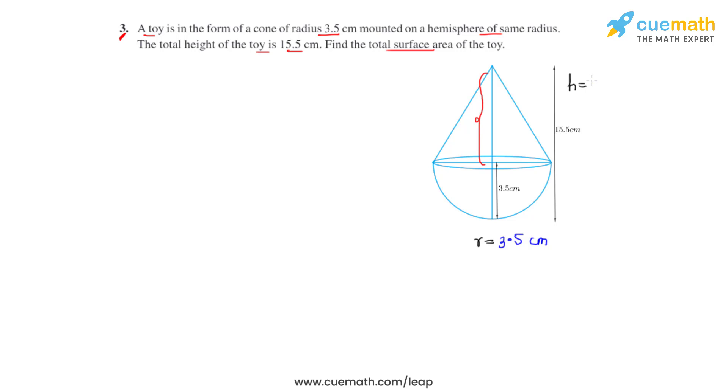Now in the question they have asked us to find the total surface area of the toy. The total surface area of the toy can be found by adding the curved surface area of hemisphere, which is the bottom part, plus the curved surface area of the cone which is mounted.